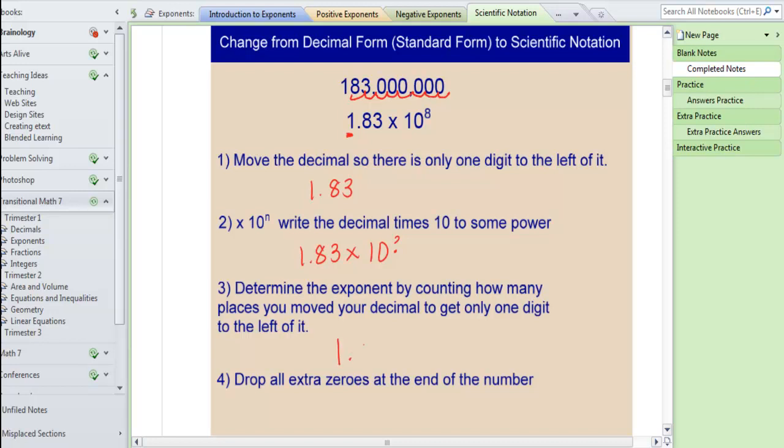So I am going to write 1.83 times 10 to the 8th. And notice that we have dropped all extra zeros at the end of the number or for a decimal number at the beginning. So the whole point is to be able to write these great big numbers and these small numbers without all those zeros.